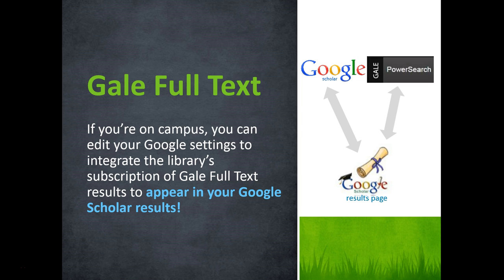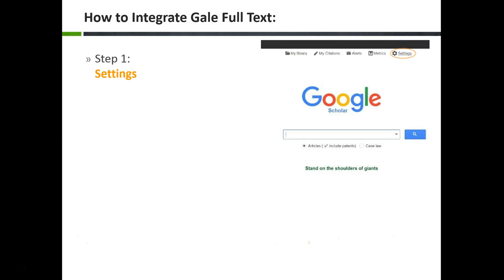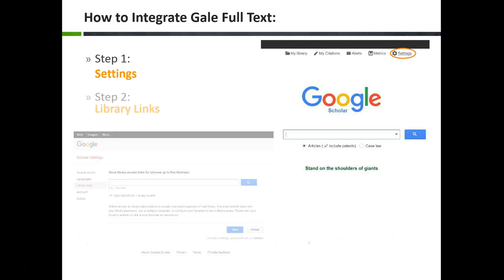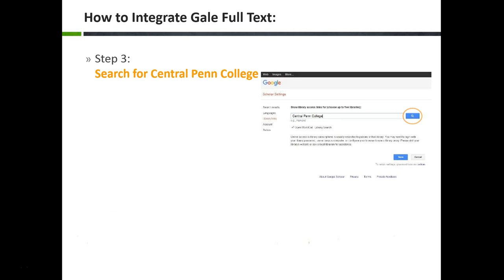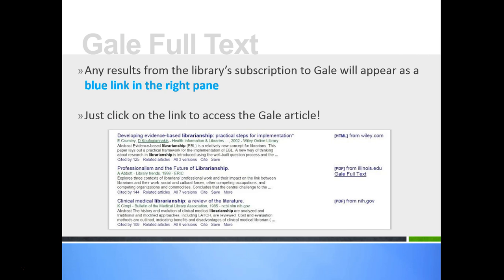If your computer or laptop is hooked up to the campus wireless, then you can include results from Gale databases provided by the library with your Google Scholar results. To do that, click the Settings button in the upper right corner of the Google Scholar home screen. Then click the Library Links button in the left menu. Conduct a search for Central Penn College, then checkmark the box next to Central Penn College — Gale Full Text — and finally click Save. Now you'll be able to see results from Google Scholar and results from Gale. Results from Gale will include a link in the right pane that says 'Gale Full Text'. Clicking on this link will navigate you out of Google Scholar and into Gale.